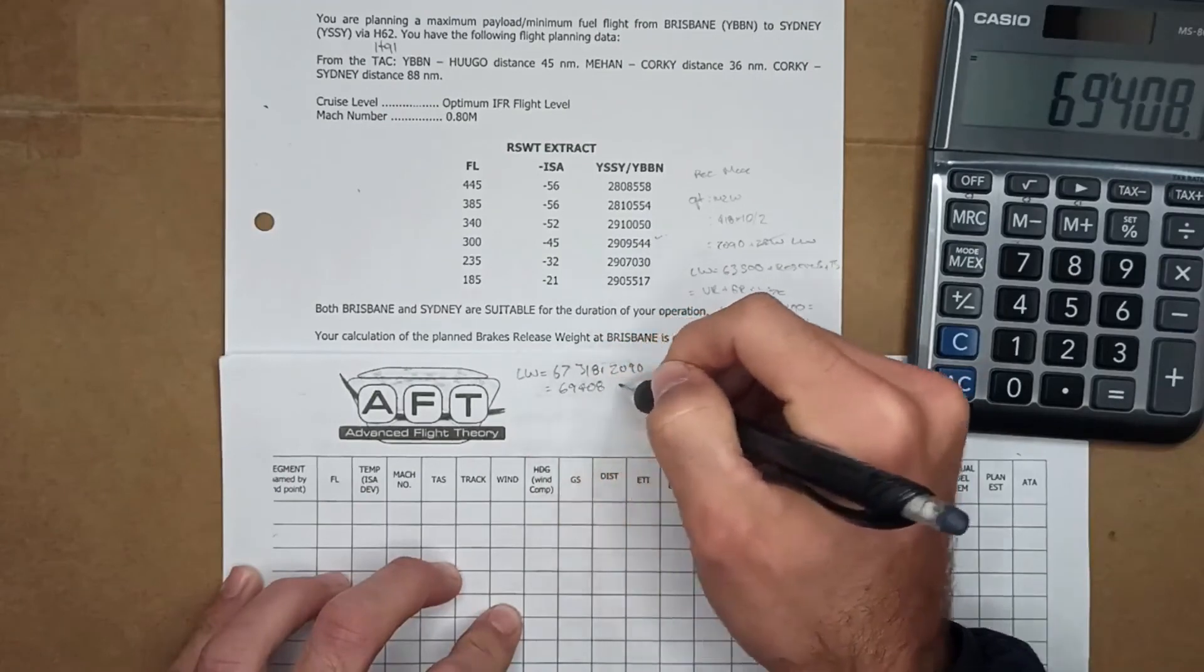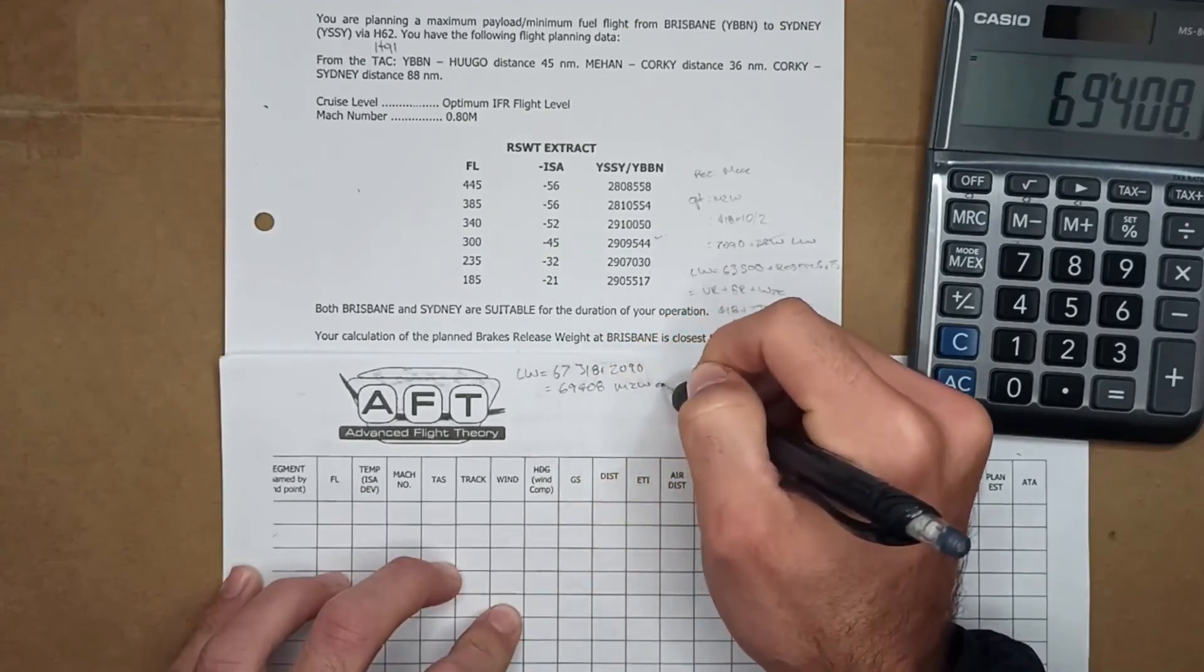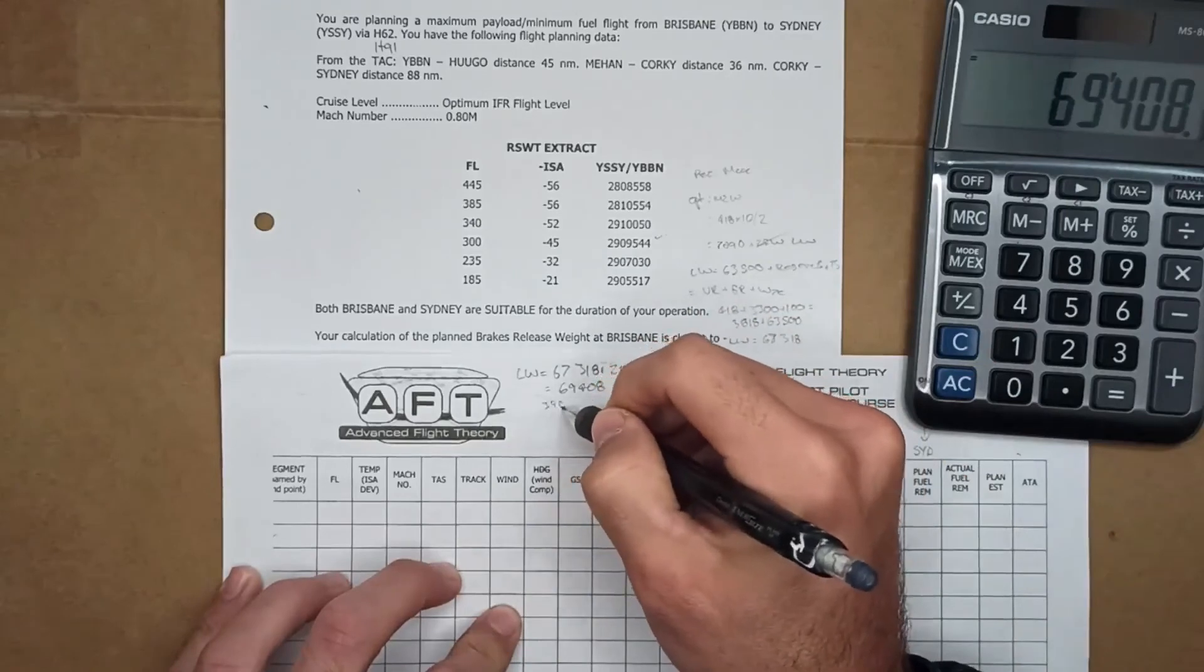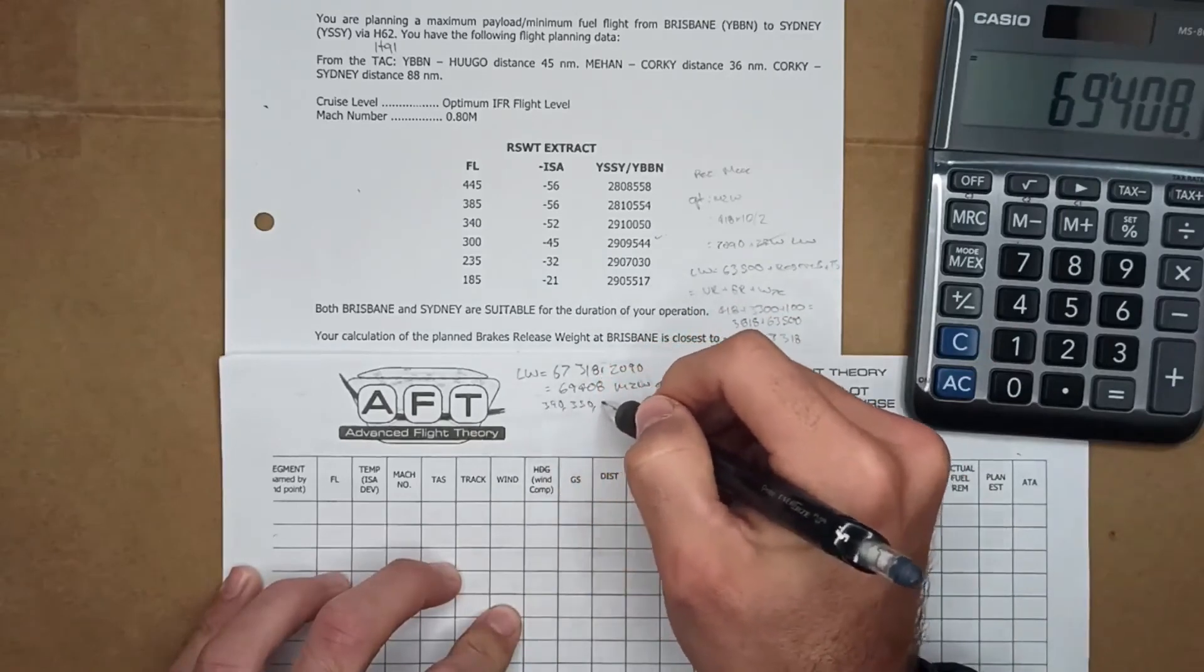69,408 is our mid zone weight for opt. We're going westerly so we know it's 39, 35 or 31.